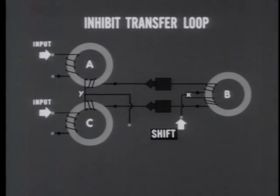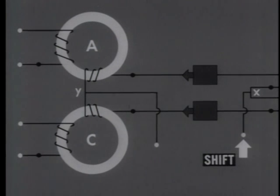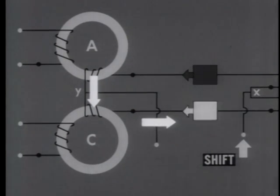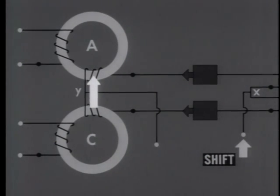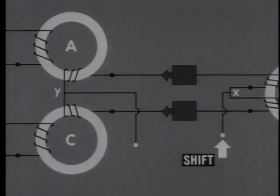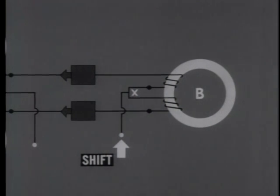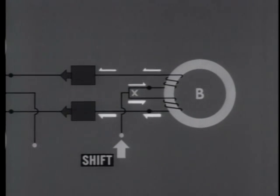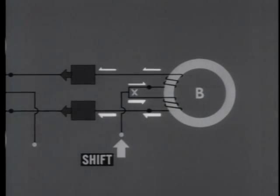Notice that each core is isolated. Core B is not directly affected by what happens at A or C because the diodes oppose the flow of current from A and C. The diodes also isolate A and C from each other — a change in the flux of A will not produce an output to C because the lower diode will not conduct in that direction, nor can there be an output from core C up to core A because the upper diode will not conduct. Only one kind of transfer can be made in this loop: it will occur when a shift pulse is applied to the split winding and divides unequally into a small upper branch and a large lower branch. The inhibit loop has a different way of making the branches unequal, as we shall now demonstrate.